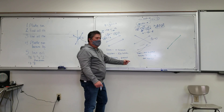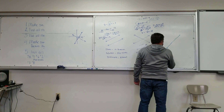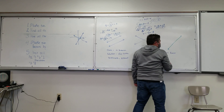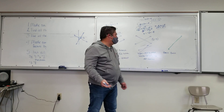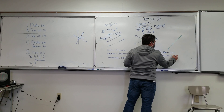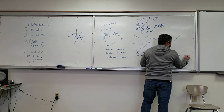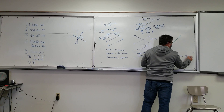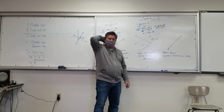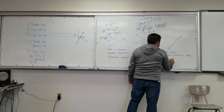Now this last type: the slopes must be the same because you're really ending up with the same line. The solutions are infinitely many — or some people say all real numbers. I can pick any x and I'll have a y that matches anywhere along that line. The y-intercepts have to be the same.